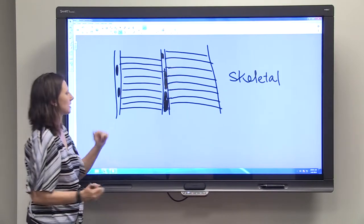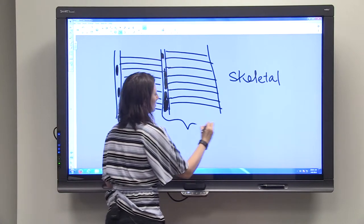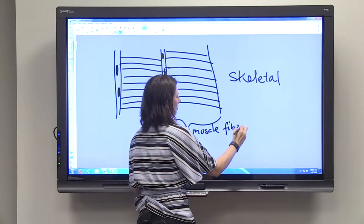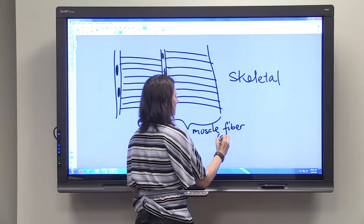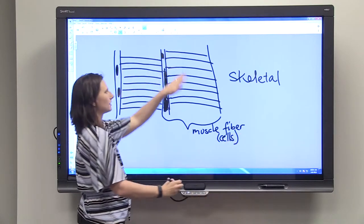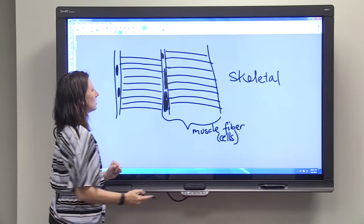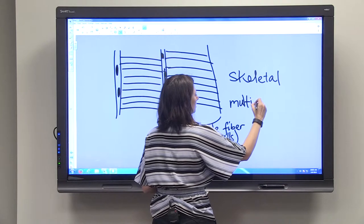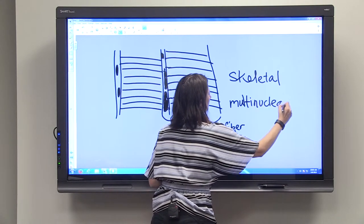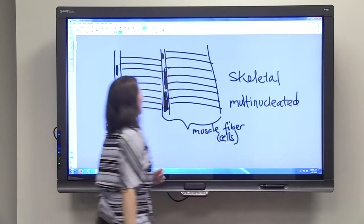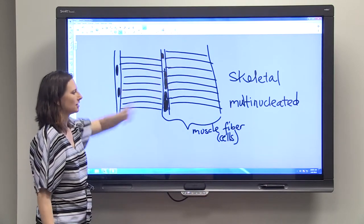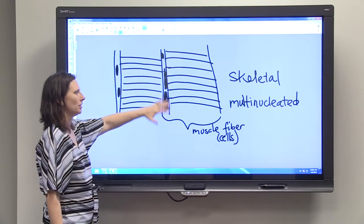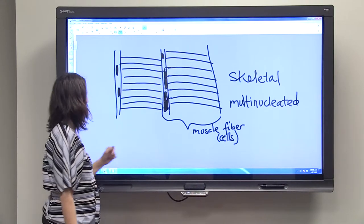Skeletal muscle cells are muscle fibers and this is one of them. They're called muscle fibers or muscle cells. They are striated, like we said, so you can see this striped appearance. They're also multinucleated. That means they have more than one nucleus in one cell. So that's one way you can tell skeletal muscle, which is striated, from cardiac muscle, which is also striated.